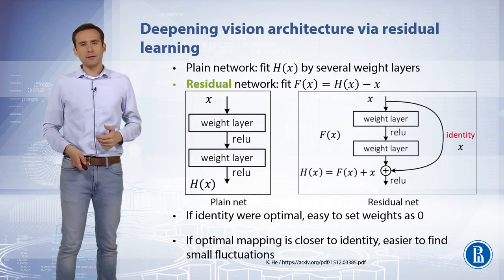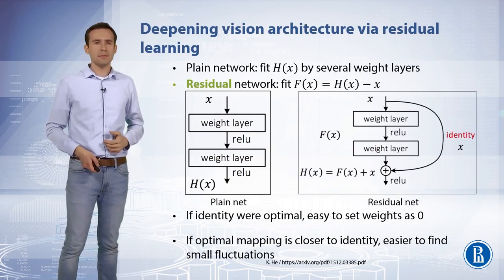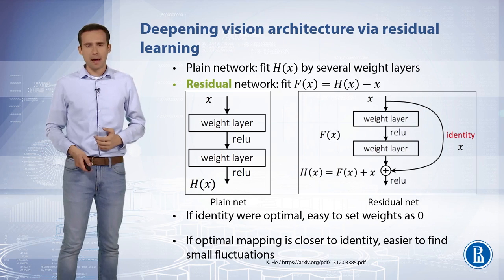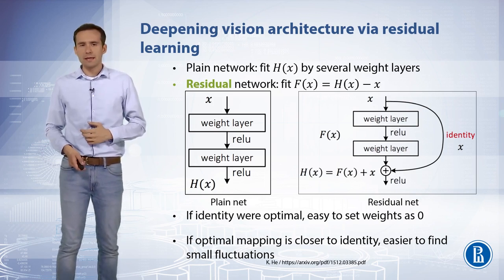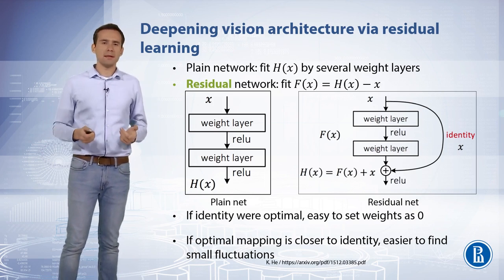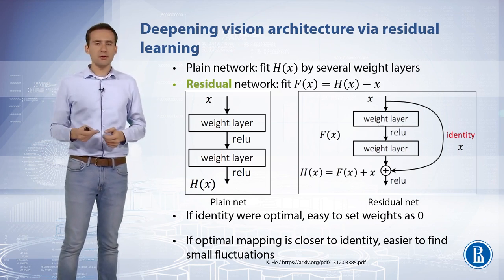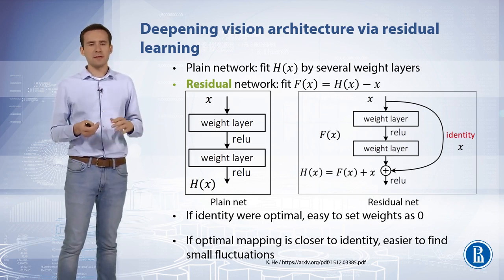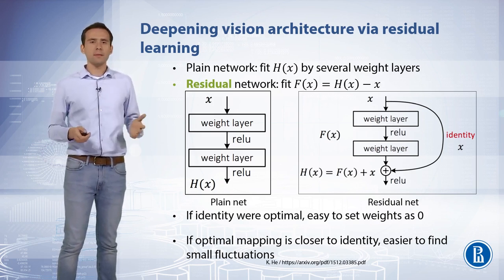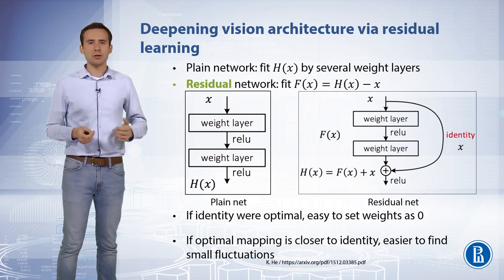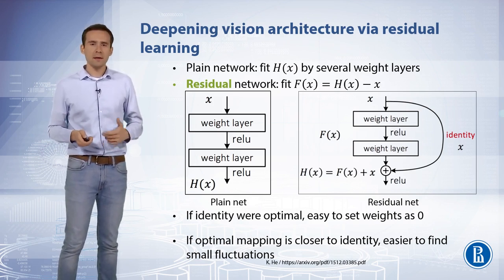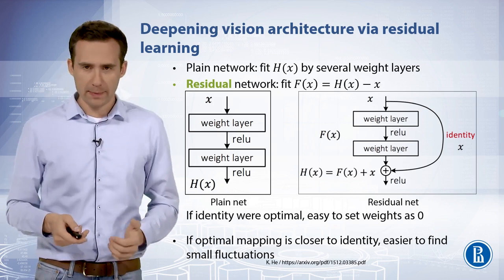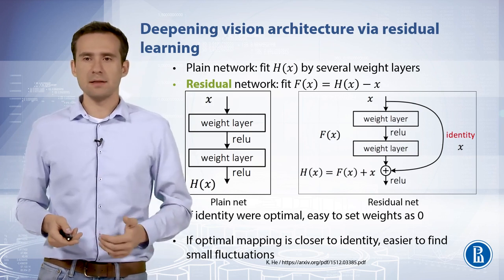However, we can tackle this problem with a deep residual learning framework. Recall that we want a network to fit some mapping from the pixel space to the space of labels, decomposed into smaller mappings implemented by layers. Instead of hoping each few stacked layers directly fit a desired underlying mapping, we explicitly let these layers fit a residual mapping. Formally, denoting the desired underlying mapping as H, we let the stacked nonlinear layers fit another mapping F(x), which is H(x) minus x. The original mapping is recast into F(x) plus x.